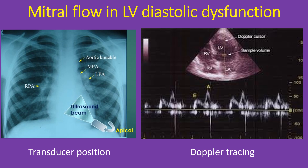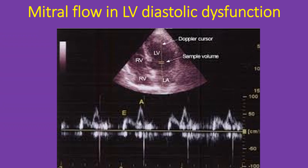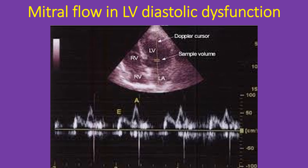Doppler interrogation of the mitral valve is usually done from the apex through the apical 4-chamber view. The transducer is placed directly over the apex beat and the echo beam is directed upwards. A good 4-chamber view of the heart is obtained, showing all 4 chambers and both atrioventricular valves. The Doppler cursor is then aligned along the long axis of the left ventricle passing through the mitral valve, and the sample volume is placed just distal to the mitral valve to pick up the flow in the left ventricular inflow.